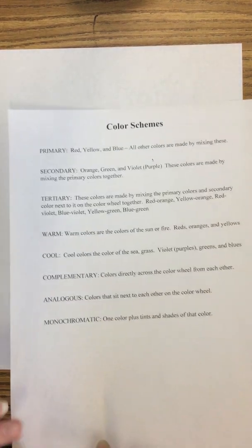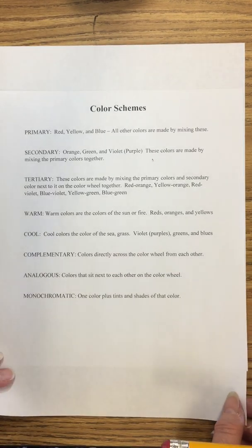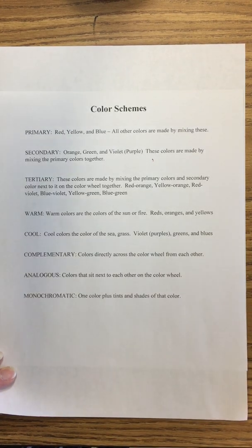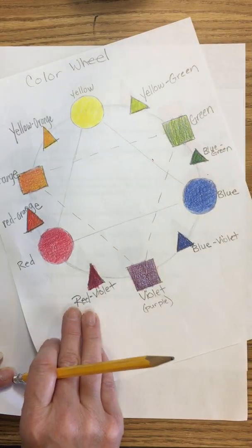Today we are going to create a work of art using the color wheel and the color schemes that we talked about yesterday and the day before. On the back of the color wheel that you created yesterday, you are going to write the definitions for each of these color schemes. These are listed in Canvas so you can just pull that up and write those on the back of your color wheel.